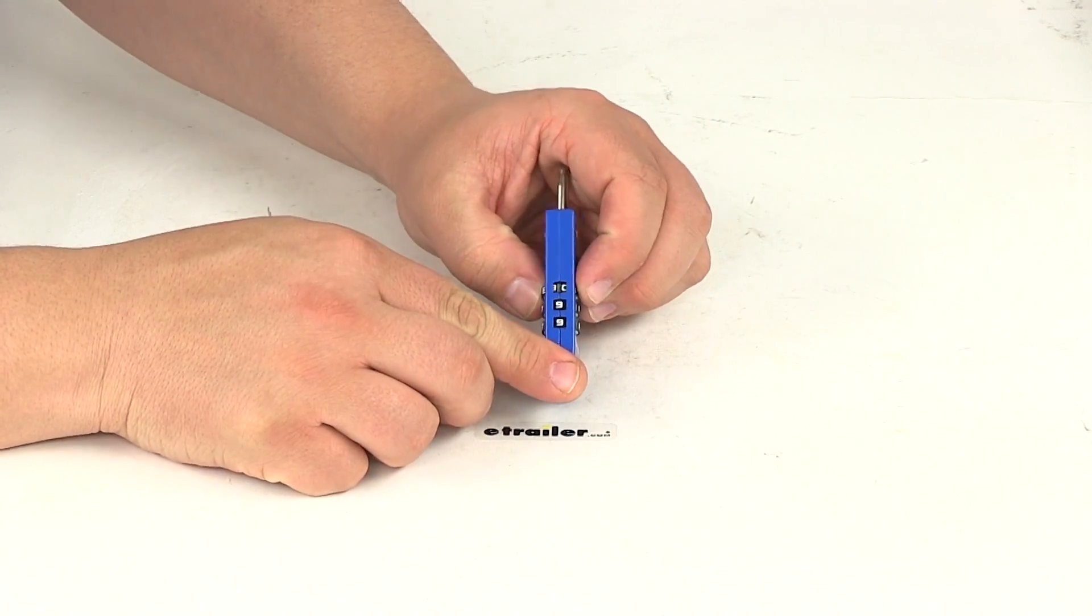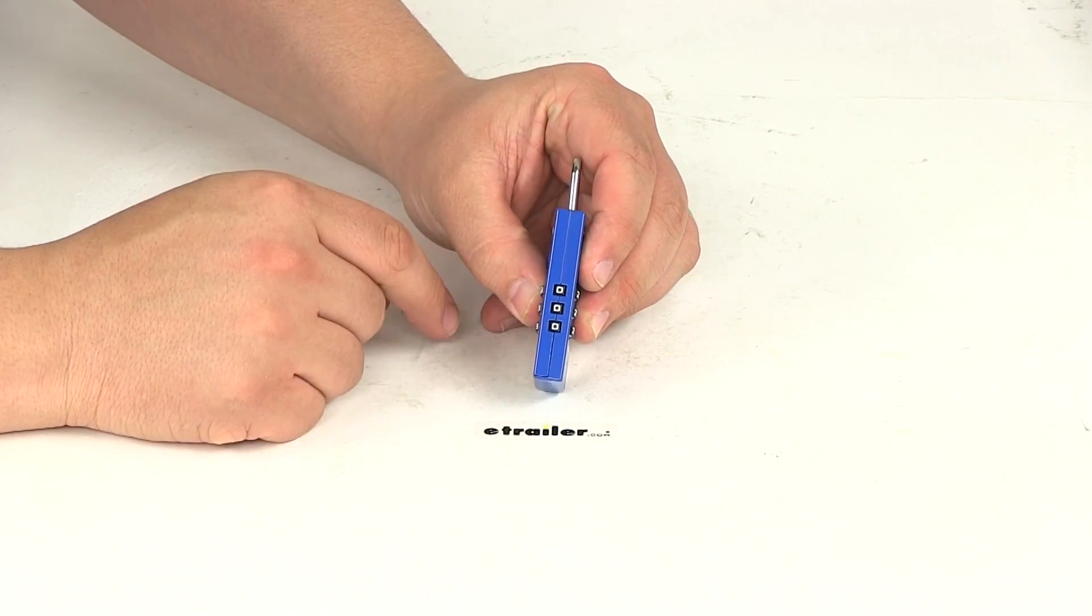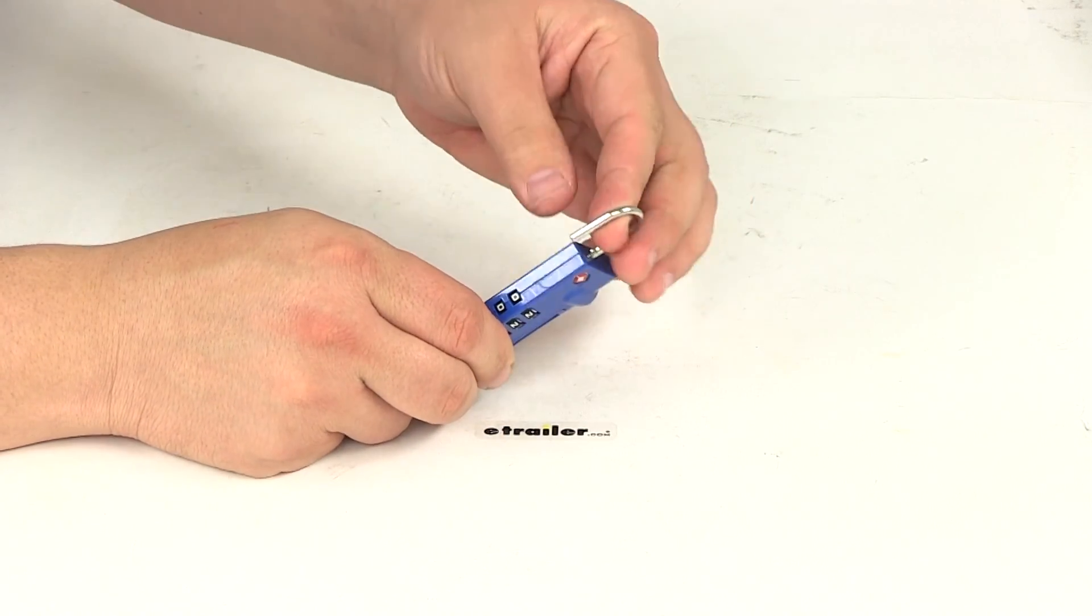It's going to come preset, or this one did, at zero, zero, zero. So line those up in the viewer there, it's going to allow the shackle to come out. You can rotate it all the way around.